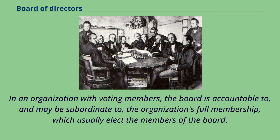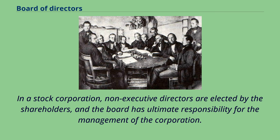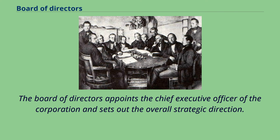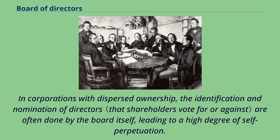In an organization with voting members, the board is accountable to and may be subordinate to the organization's full membership, which usually elects the members of the board. In a stock corporation, non-executive directors are elected by the shareholders and the board has ultimate responsibility for the management of the corporation. In nations with co-determination, the workers of a corporation elect a set fraction of the board's members. The board of directors appoints the chief executive officer and sets out the overall strategic direction. In corporations with dispersed ownership, the identification and nomination of directors are often done by the board itself, leading to a high degree of self-perpetuation.